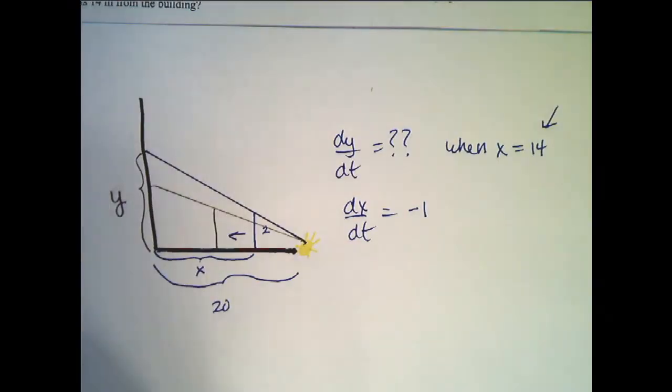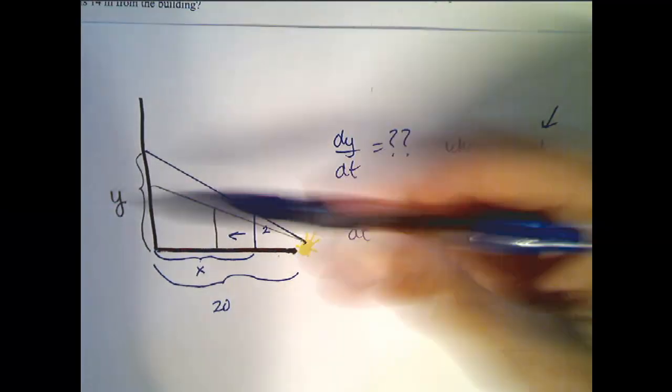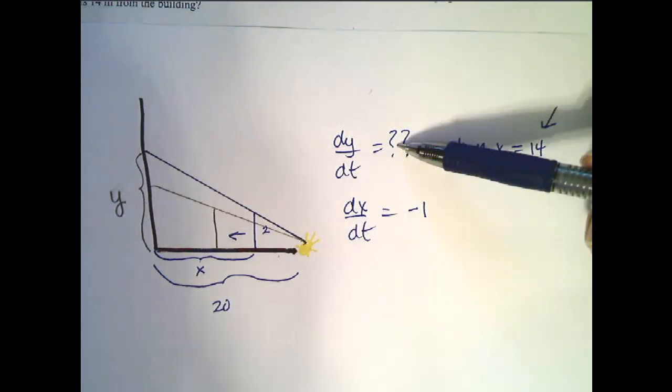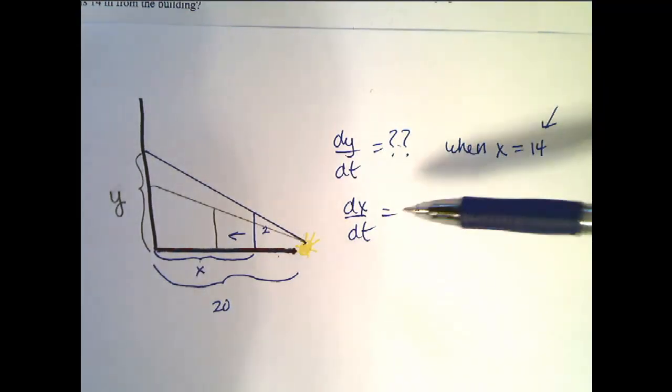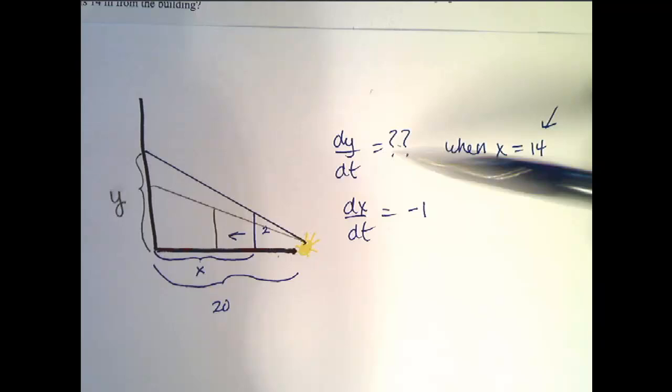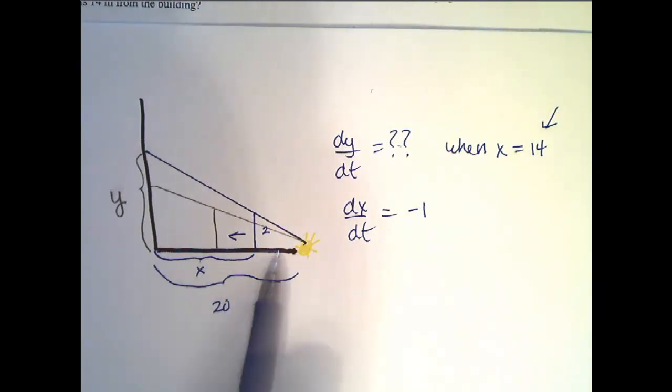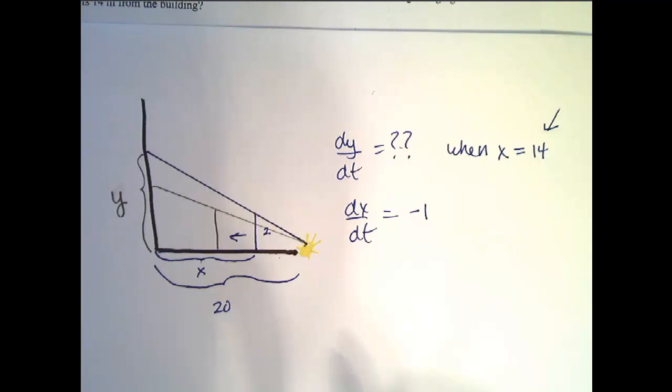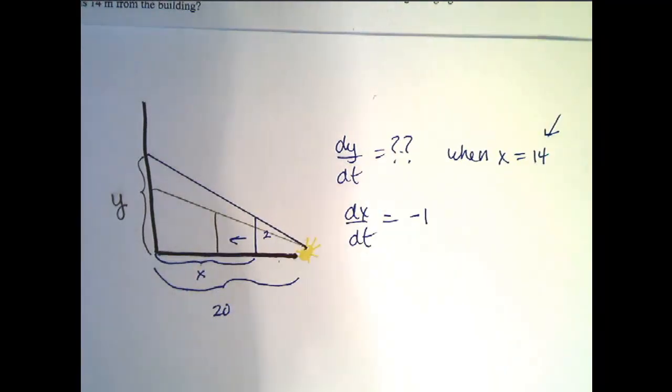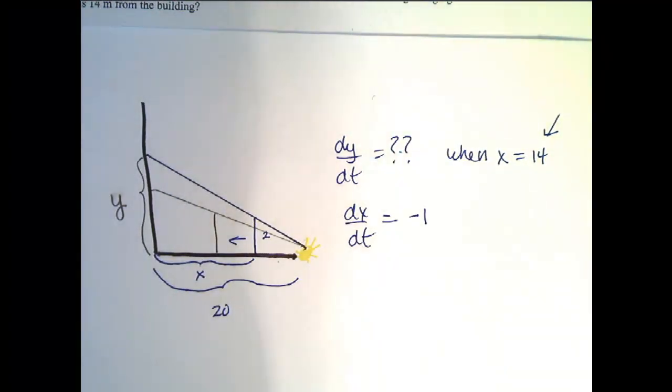Okay, now that we have our picture, everything labeled, we have identified what we're looking for and what we know, we now need to find a relationship between what we know and what we're looking for. And so, this involves a triangle, so you are probably right to think of the Pythagorean Theorem. However, not all triangles require us to use a Pythagorean Theorem. Sometimes we're going to use similar triangles,